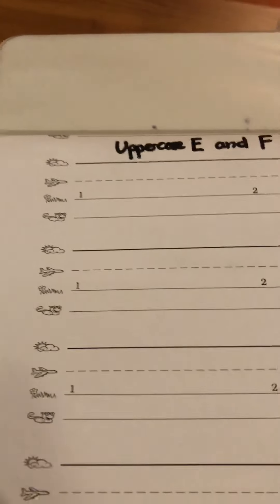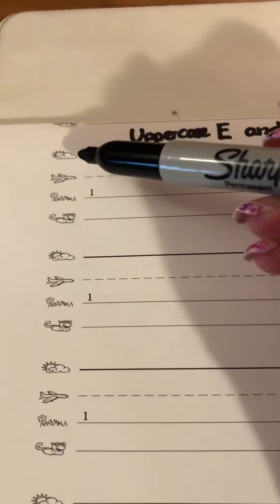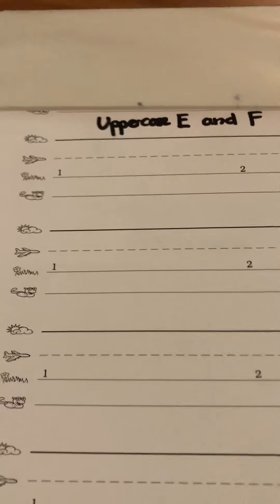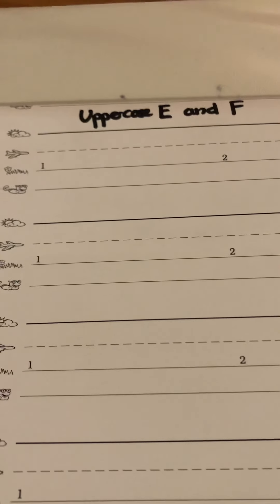We are using foundations paper today since it has the pictures for the skyline, plane line, grass line, and worm line. But if you have regular handwriting or printing paper at home that will work just fine as well.